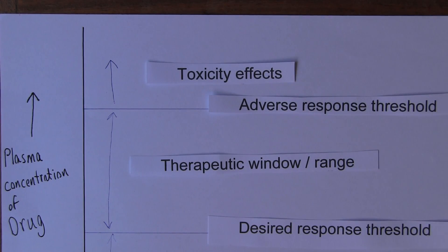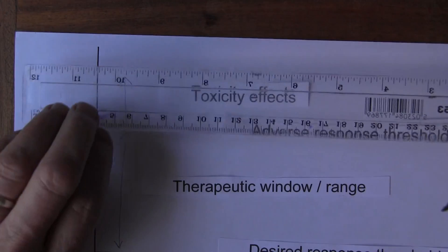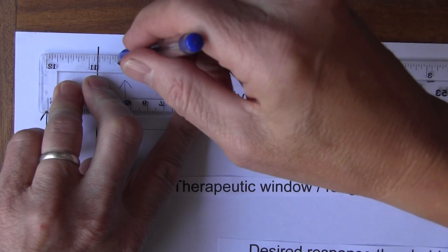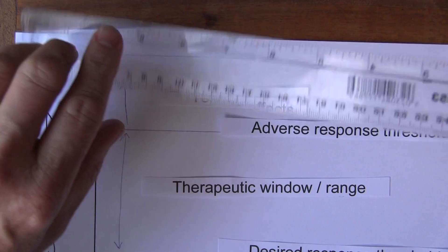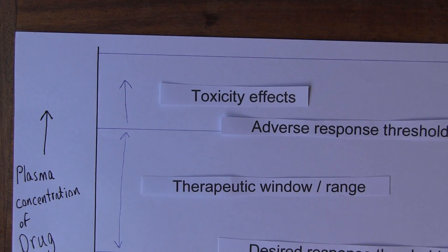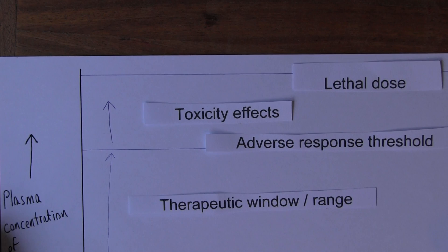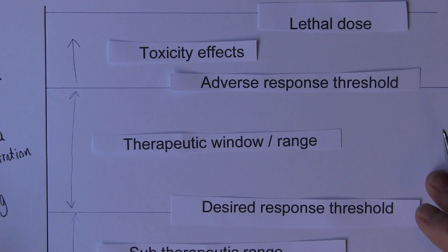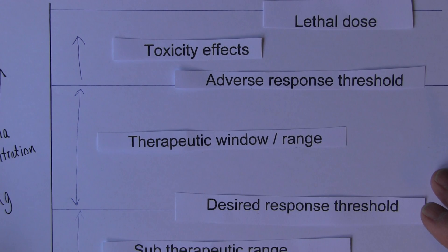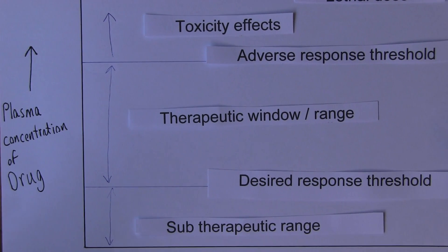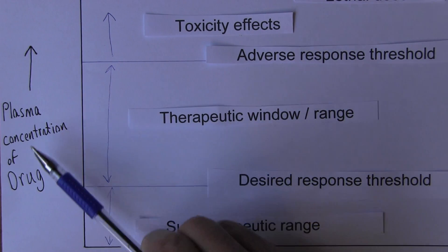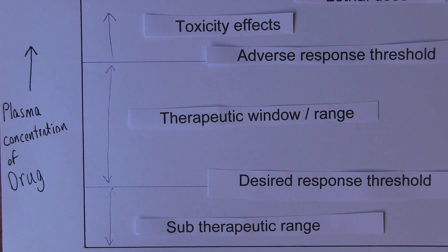With many drugs, if we keep giving more and more, we eventually reach yet another threshold at high concentrations — the lethal dose. If we give enough of most drugs we'll reach a lethal dose. So we need to think about the plasma concentration of the drug to achieve the right therapeutic dose, giving an appropriate therapeutic plasma concentration or range.